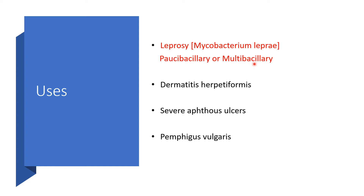For those asking what paucibacillary and multibacillary mean: paucibacillary means a small bacterial load, and multibacillary means a larger, multiple bacterial load — you will learn more. Dapsone is also useful in dermatitis herpetiformis, severe aphthous ulcers, and pemphigus vulgaris, so dermatologists will make use of it as well.